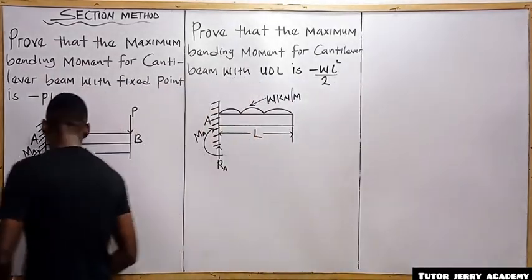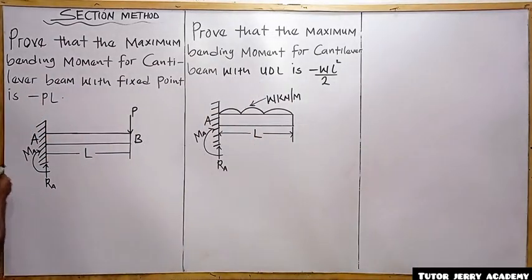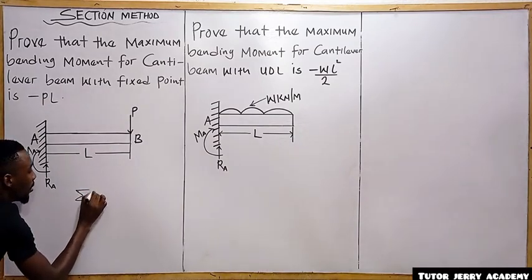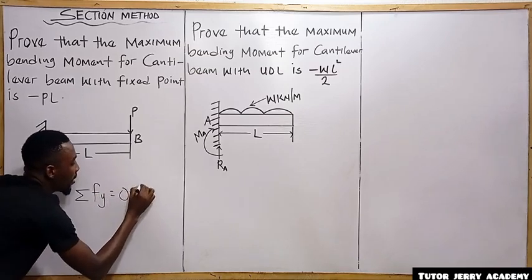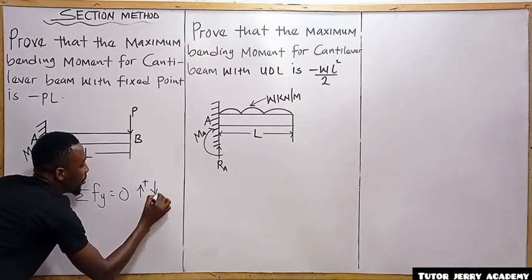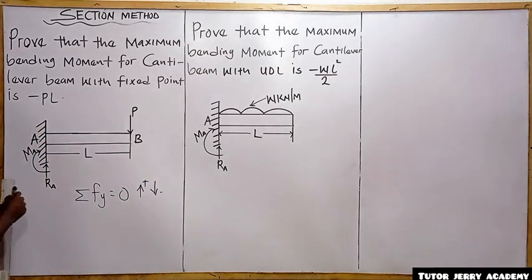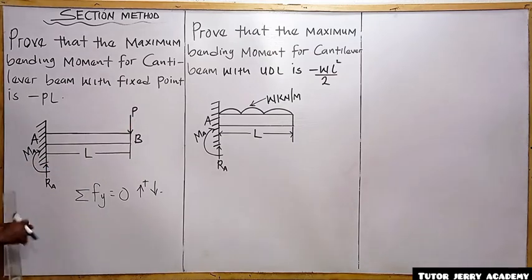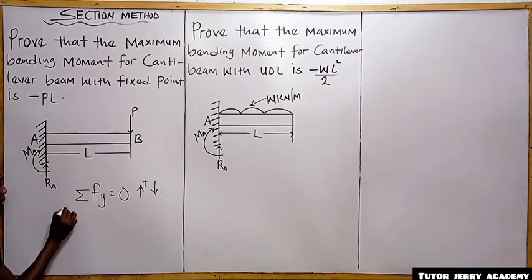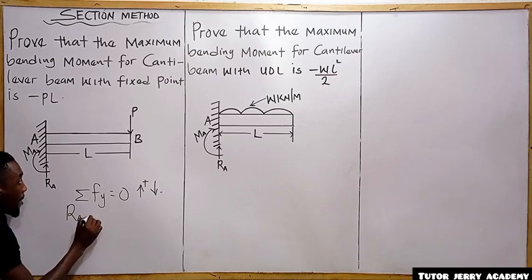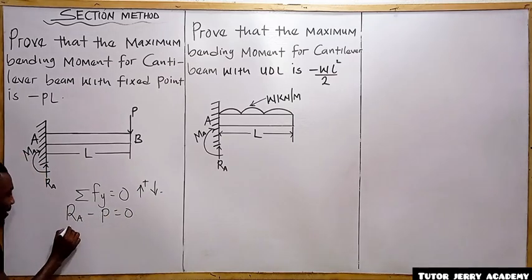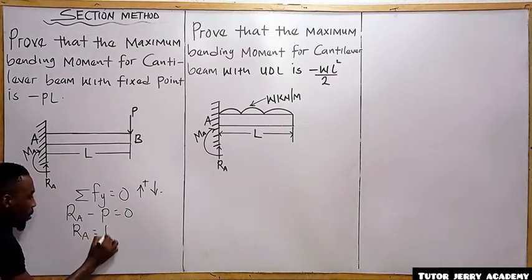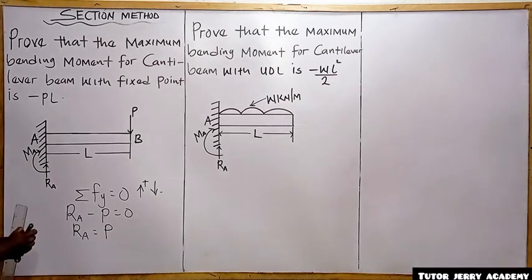For the first problem, we start with the summation of vertical forces equals zero, taking upward force as positive and downward as negative. We have the reaction at A and the point load P. So: R_A minus P equals zero, which means the reaction at A equals P.